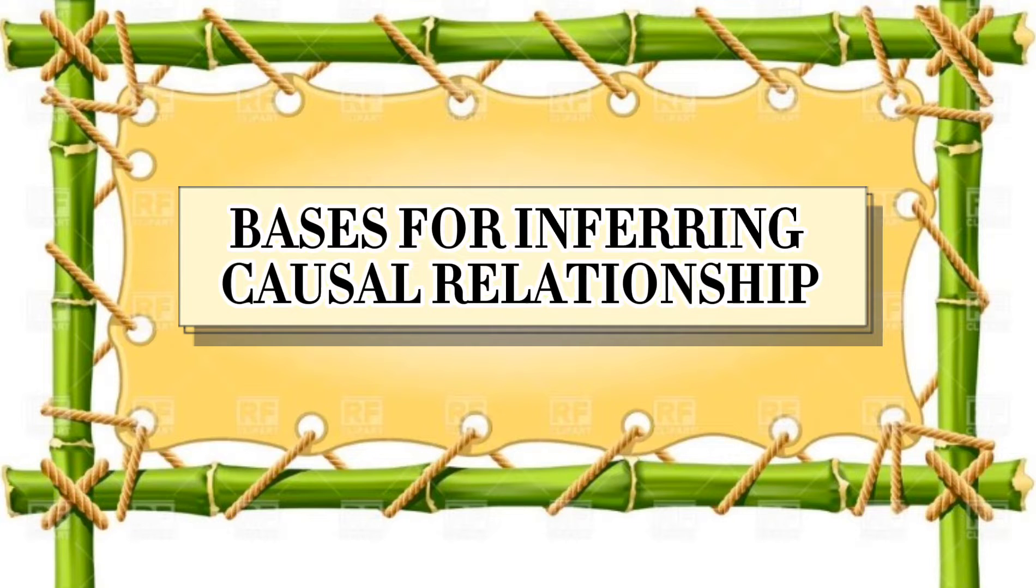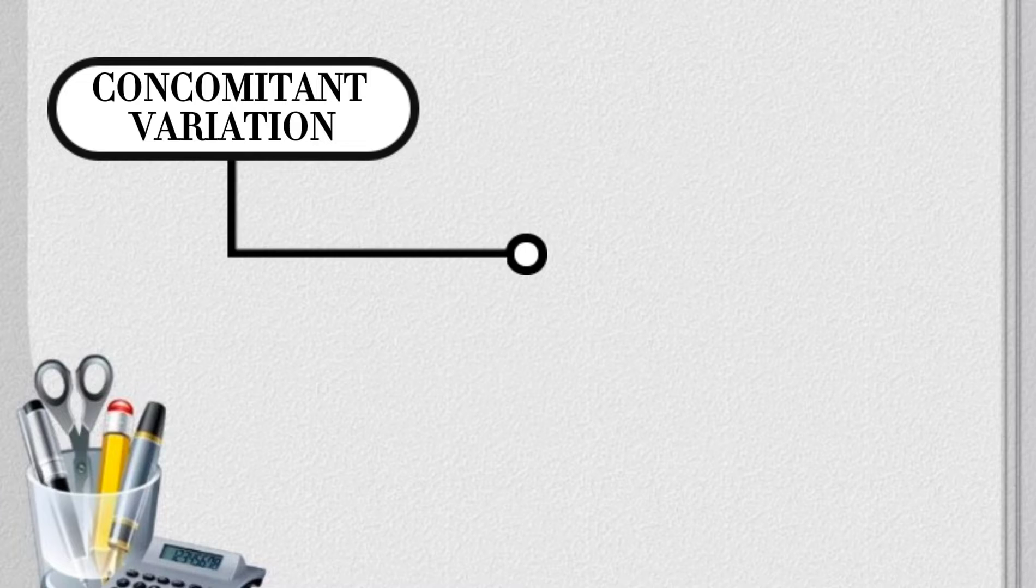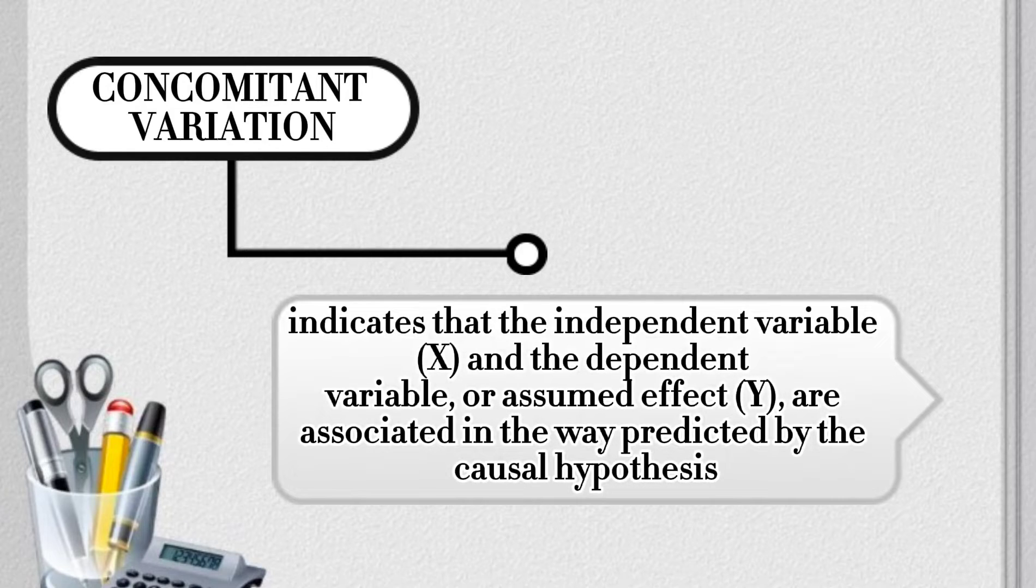Bases for inferring causal relationship. One type of evidence for inferring a causal relationship is known as concomitant variation. Evidence of concomitant variation or covariation when the rare two variables indicates that the independent variable x and the dependent variable or assumed effect y are associated in the way predicted by the causal hypothesis.